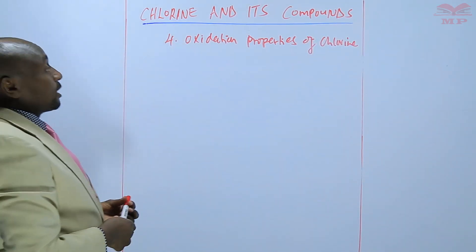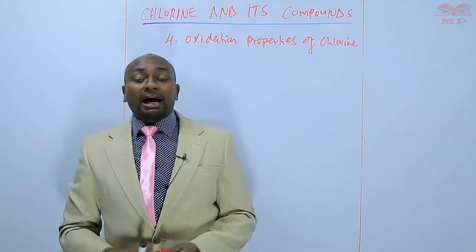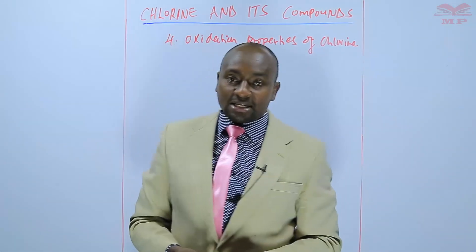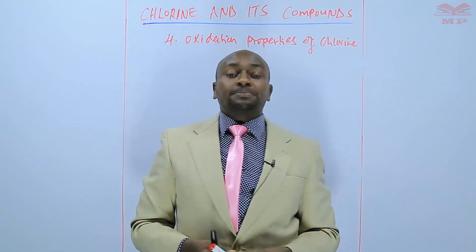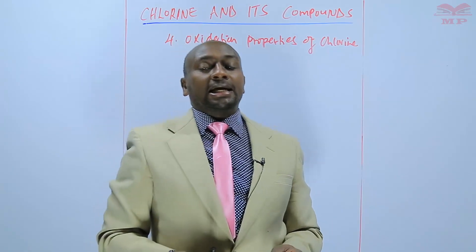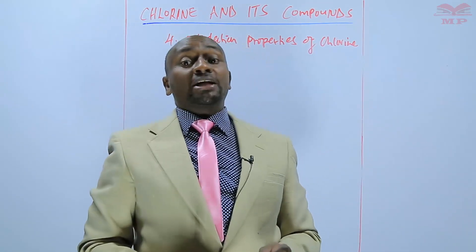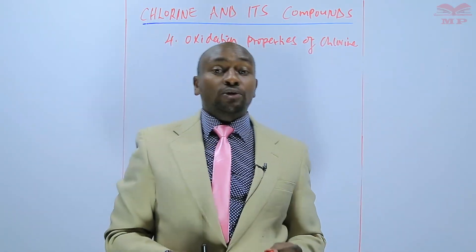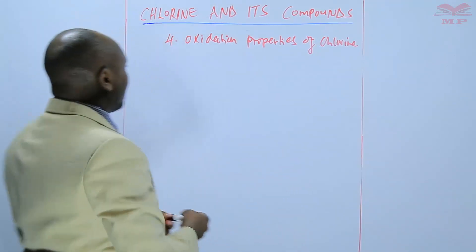Chlorine is an oxidizing agent and it can oxidize a number of substances. For instance, if we have metal sulfites, those metal sulfites are oxidized to metal sulfates by chlorine. So in that case, chlorine becomes an oxidizing agent. We can have an example.